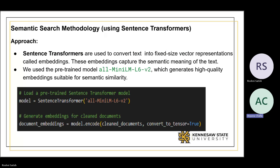The first model we used is a semantic search methodology. We use sentence transformers to convert the text — both queries and documents — into embeddings. These embeddings capture the semantic meaning of the text. We use a pre-trained model from the sentence transformers library, which generates high quality embeddings, and we also use cosine similarity to measure the similarity between the query and each document.